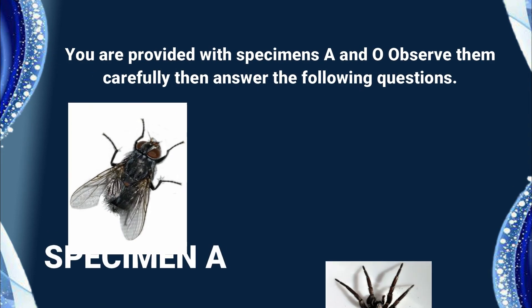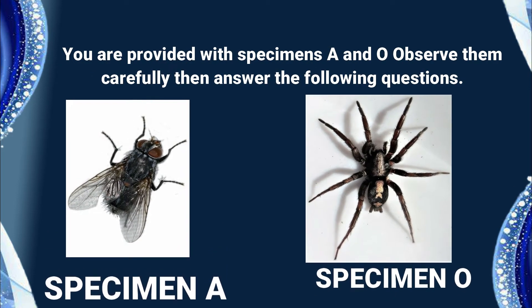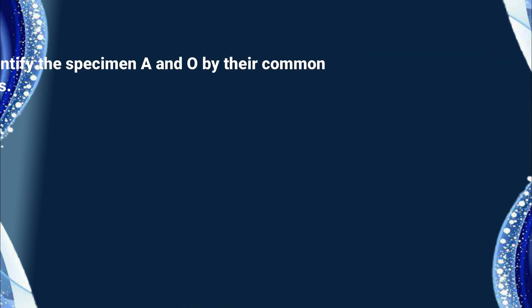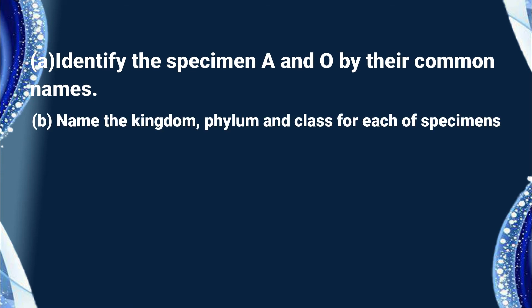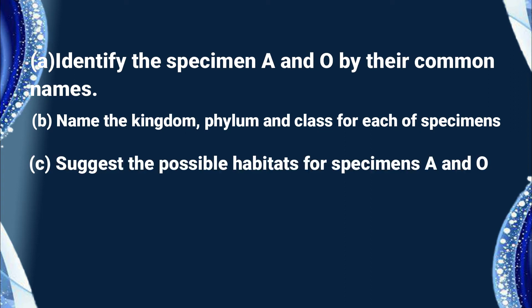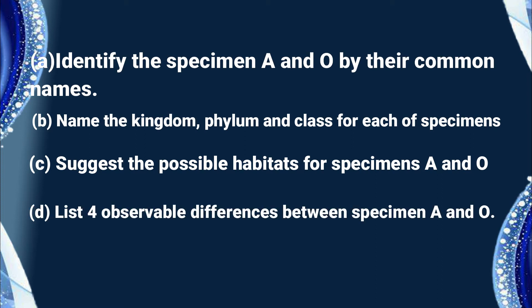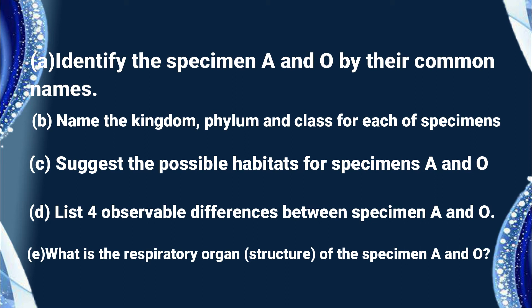Our question for today: you are provided with specimen A and specimen O. Observe them carefully and then answer the following questions. Question one: identify specimen A and specimen O by their common names. Question two: name the kingdom, phylum, and class for each of the specimens. Question three: suggest the possible habitats for specimen A and specimen O. Question four: list four observable differences between specimen A and specimen O. Question five: what is the respiratory organ of specimen A and specimen O?